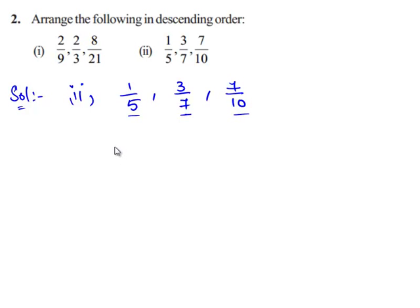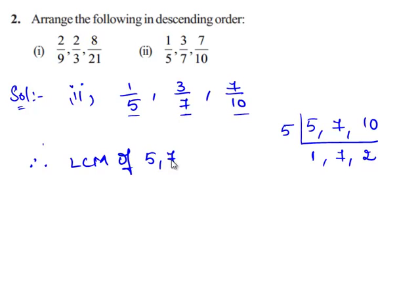To obtain a common denominator, we shall find the LCM of 5, 7, and 10. Since 5 and 10 are multiples of 5, consider the prime factor 5. 5 goes into 5 one time, 7 remains the same, and 5 goes into 10 two times. Therefore, the LCM of 5, 7, and 10 equals 5 × 2 × 7, which equals 70.